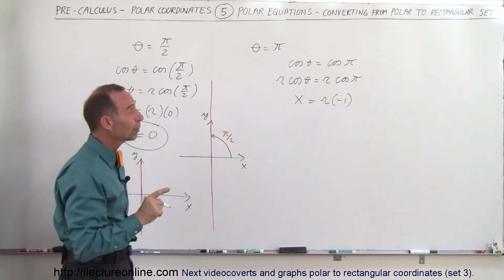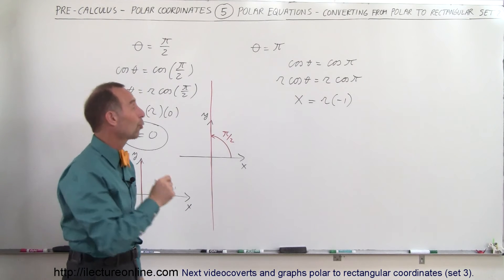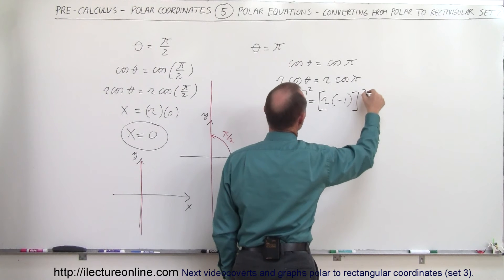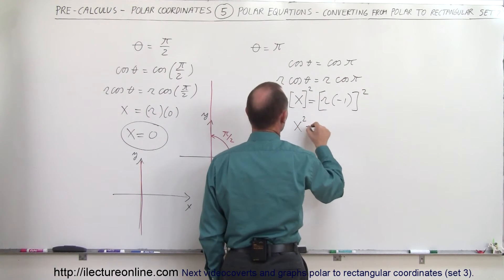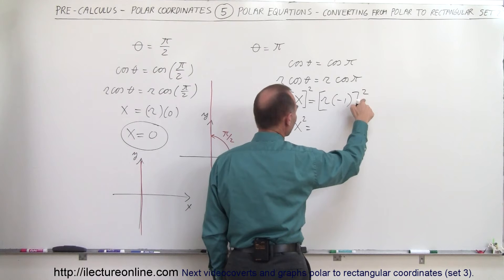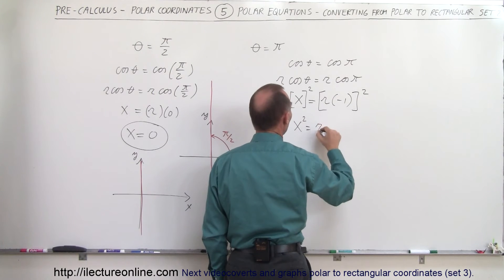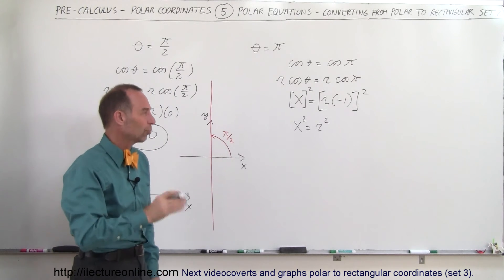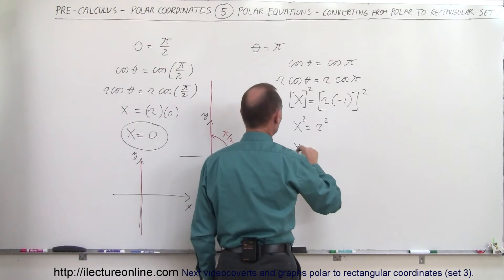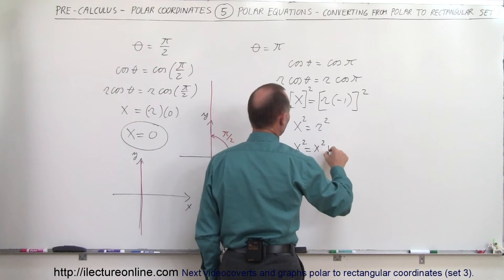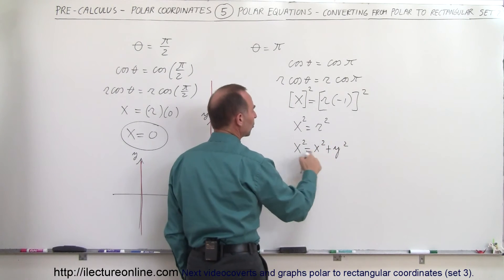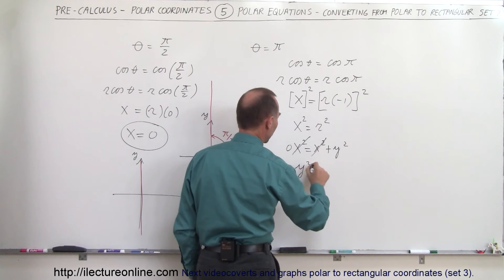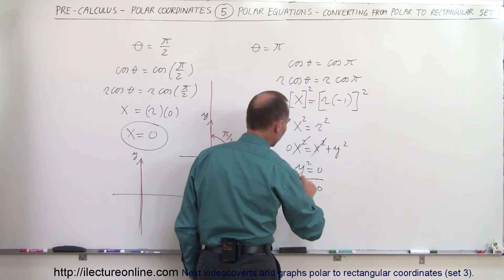What we're going to do now is square both sides. So we get x squared on the left side, and negative 1 squared is positive 1, giving us r squared on the right side. Remember that r squared equals x squared plus y squared. So we can write x squared equals x squared plus y squared, which means we subtract x squared from both sides, and we get y squared equals 0, or y equals 0.